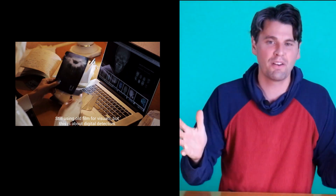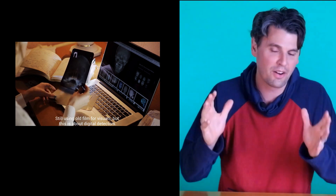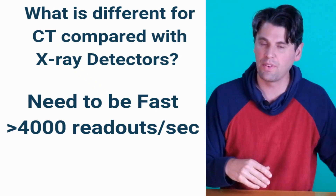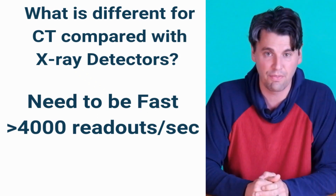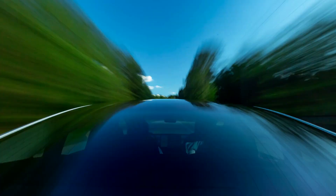In x-ray imaging you might wonder why CT is any different. CT is different for a couple of reasons compared with standard x-ray imaging. CT needs to be very fast — on a state-of-the-art CT system the fastest rotation time is 0.23 seconds. If you want about a thousand views in one rotation, that means you need more than 4,000 readouts every second. This compares with 15 to 30 readouts per second on a DR system — a couple of orders of magnitude faster.